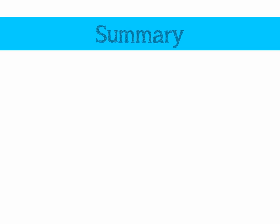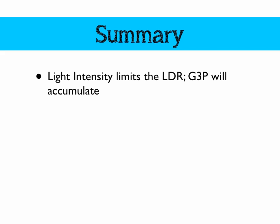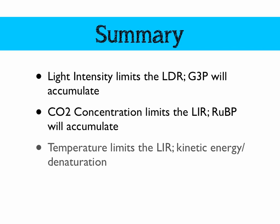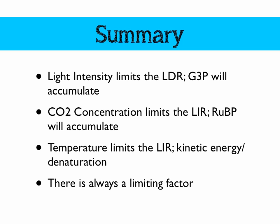To summarize: light intensity limits the light dependent reaction — when light is removed, glycerate-3-phosphate will accumulate. Carbon dioxide concentration limits the light independent reaction, and ribulose bisphosphate will accumulate. Temperature limits the light independent reaction, either by being too low — which limits kinetic energy — or being too high, which causes enzymes to denature. There is always a limiting factor.